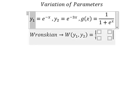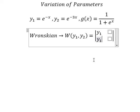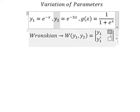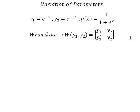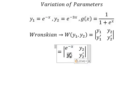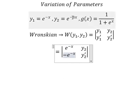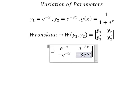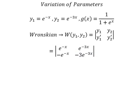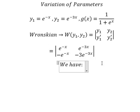We set up the matrix with y₁ and its first derivative, and y₂ and its first derivative. So y₁ goes here, and its first derivative is negative e to the power of negative s. y₂ goes here, and its first derivative is negative three e to the power of negative three s.